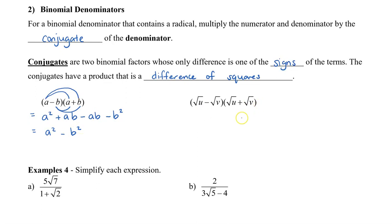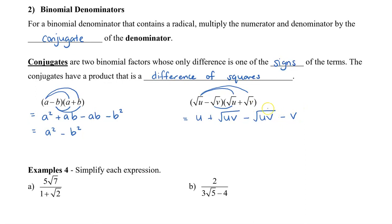Now let's see what happens when conjugates have radicals. I have (√u + √v)(√u − √v). √u times √u is just u. The middle terms, +√(uv) and −√(uv), cancel off. And −√v times √v is −v. So I'm left with u − v, and notice there are no more radicals.